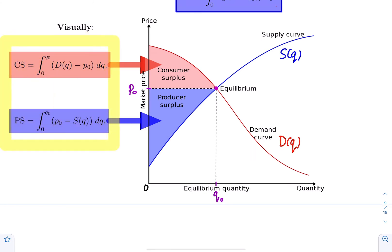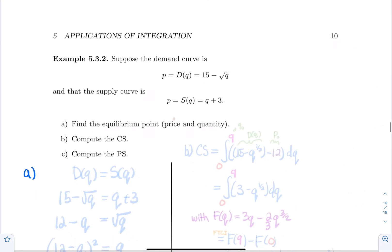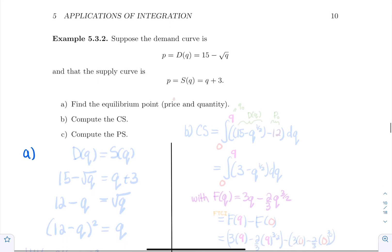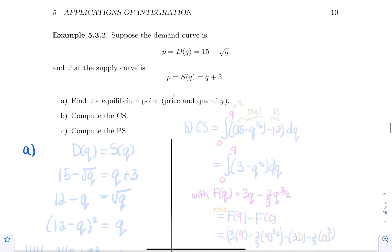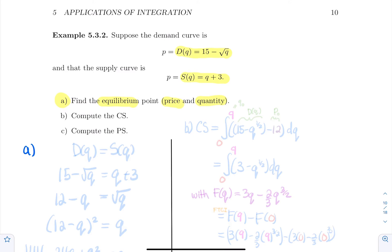Let's do an example. Suppose the demand curve is given by D(Q) = 15 − √Q, and suppose the supply curve is given by S(Q) = Q + 3. We will first find the equilibrium point — price and quantity — because we need these two things in order to set up our definite integrals to compute the consumer's surplus or the producer's surplus.